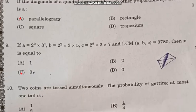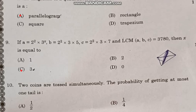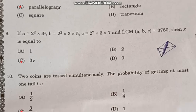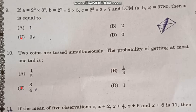Question number 9: If A equals 2 squared times 3 to the power X, B equals 2 squared times 3 times 5, C equals 2 squared times 3 times 7, and LCM of A, B, C is 3780, then X is equal to correct answer option C, 3.